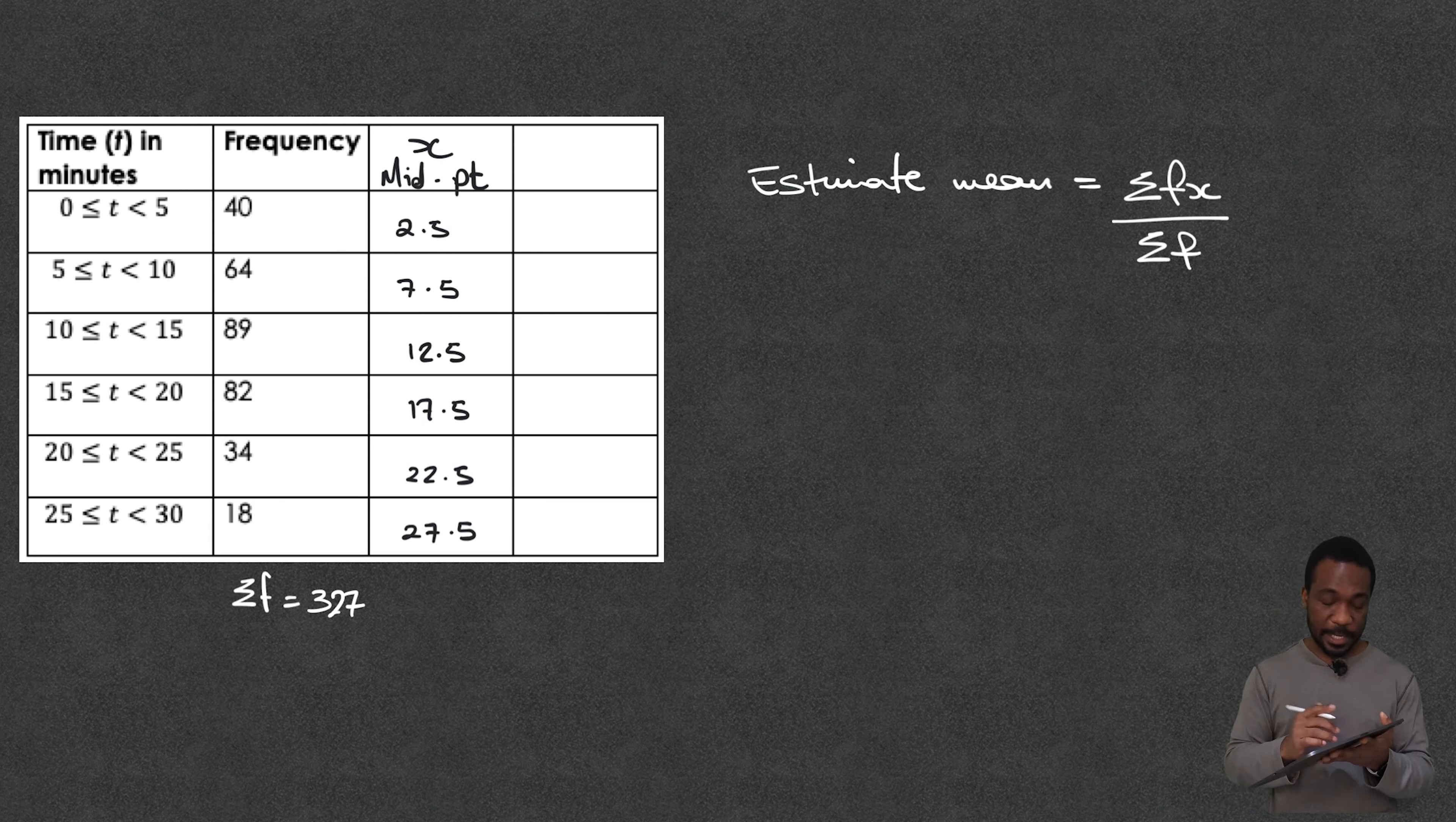Let's get back to our table. Now we need to find fx and fx if you remember from that earlier video is the frequency times the x value. So f times x.